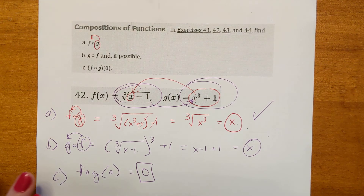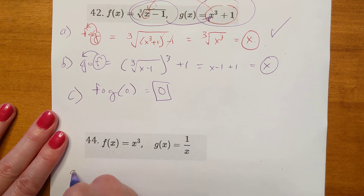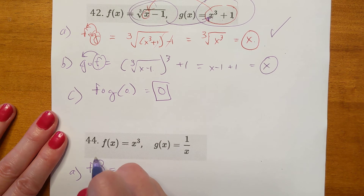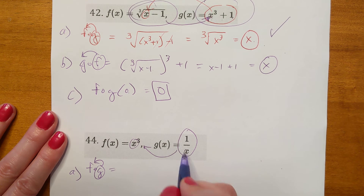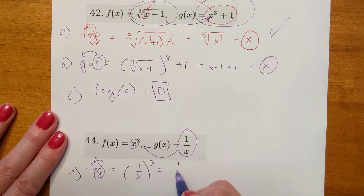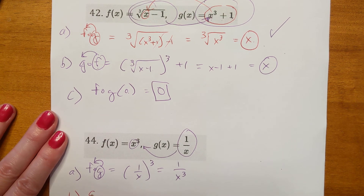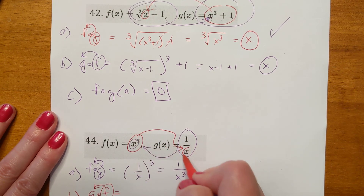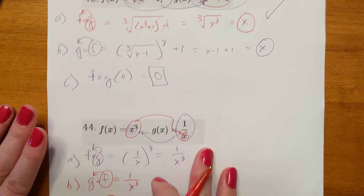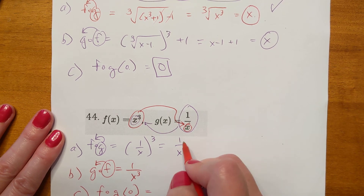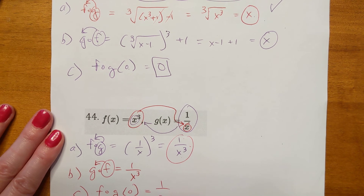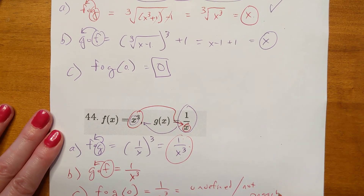On the next example, for f of g, we put g into f — so x is replaced by 1 over x. That makes 1 over x cubed, since 1 cubed is still 1. For g of f, we pick f up and put it into g, so x in g is replaced by x cubed, giving 1 over x cubed. For f of g of 0: plugging 0 into 1 over x cubed gives 1 over 0, which is undefined. So it's not possible.